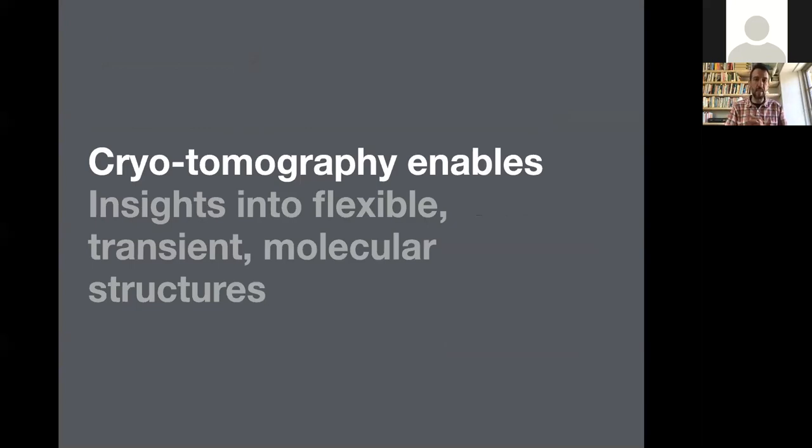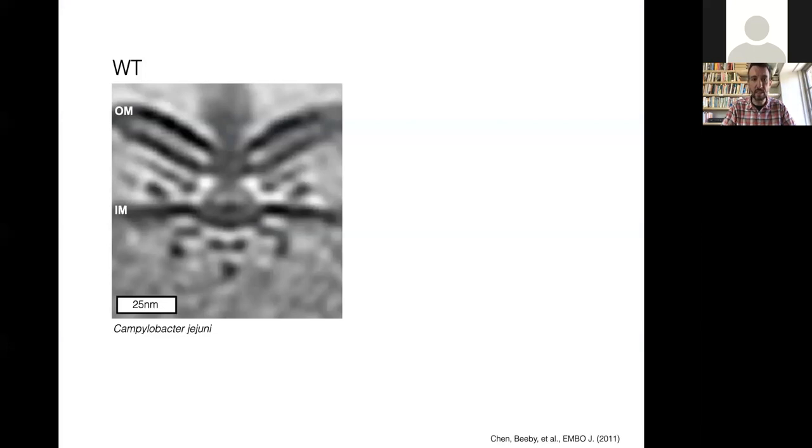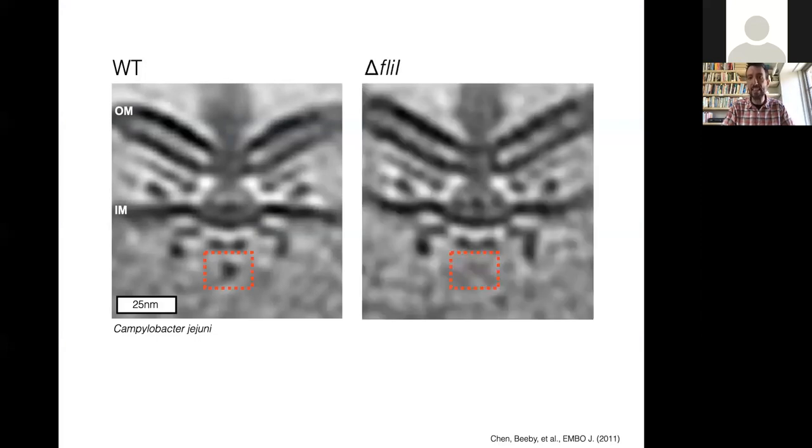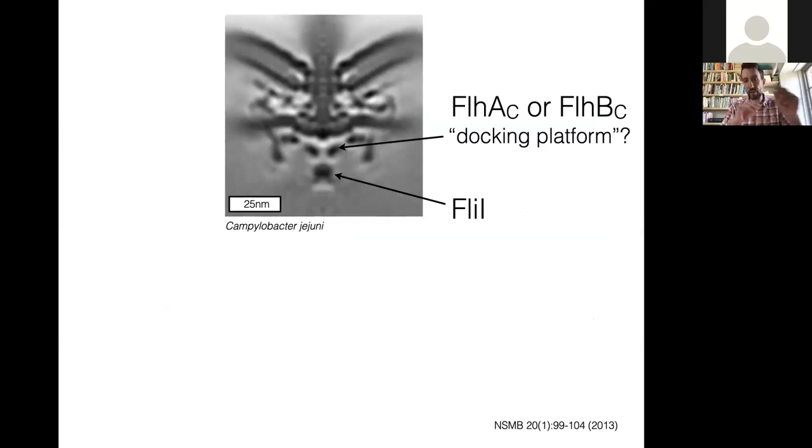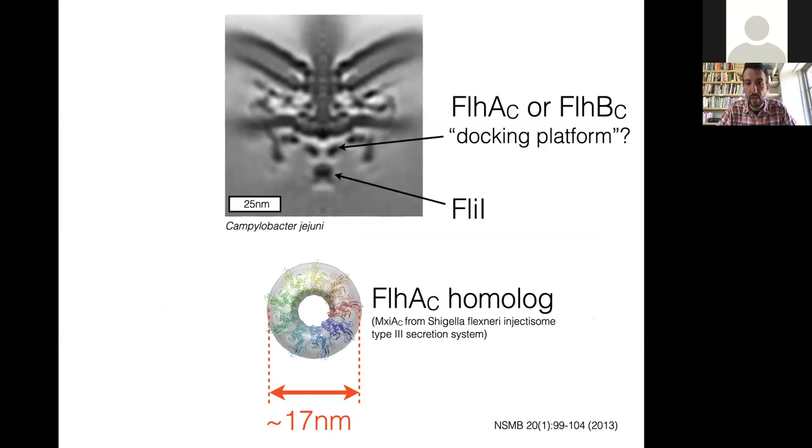The second of two stories I'm going to tell you about the technique is that tomography really enables insights into flexible transient molecular structures that you would have no chance of studying if we tried to purify them outside of their cellular context. Let me remind you of this experiment where I thought I knew what this component was, I thought it was a protein called FliI. I deleted FliI and we saw that that disappeared. We built on that later. We thought that this toroidal density was a docking platform composed of either FlhA or FlhB. We were approached by collaborators, Susan Lea, who's in Oxford, who had the crystal structure of a homologue of FlhA.